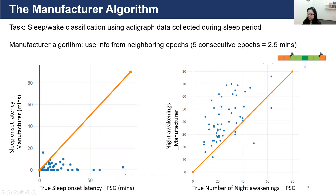We really don't want this underestimation of sleep onset latency. If we look at number of night awakenings, the manufacturer algorithm overestimates the number of night awakenings, and each awakening has a shorter duration. This is perhaps due to the fact that the manufacturer algorithm uses a relatively short window of only five consecutive epochs or 2.5 minutes, making the algorithm more likely to switch quickly between sleep and awake, resulting in more counts of night awakenings but shorter duration of each — which is less likely to happen in real life.